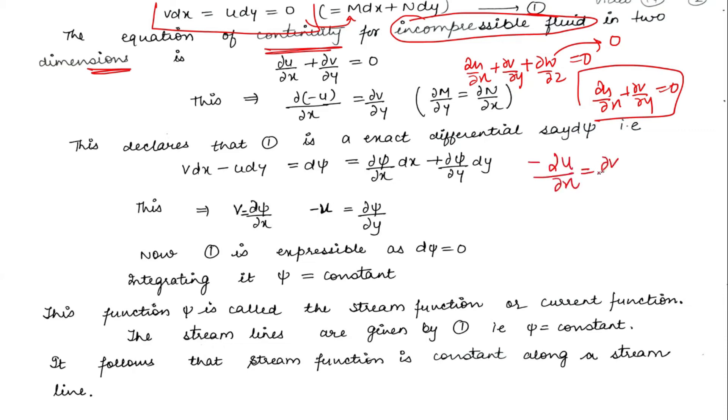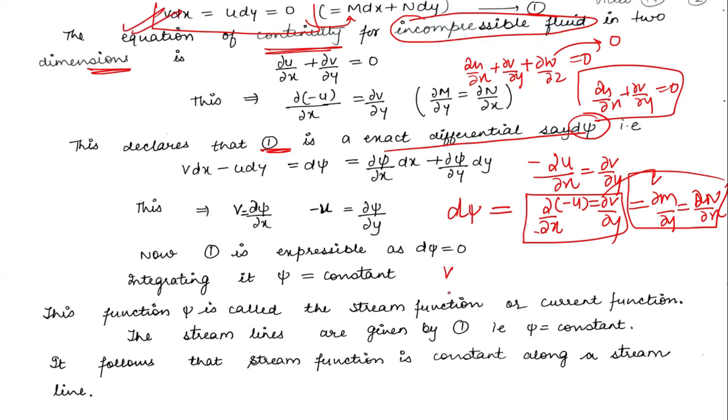This is an exact differential equation, say d psi. We equate this so del m upon del y equals del n by del x. So we can write this as a function equal to d psi. Now let's see how we can write it. We have VDX minus UDY assume to be equal.